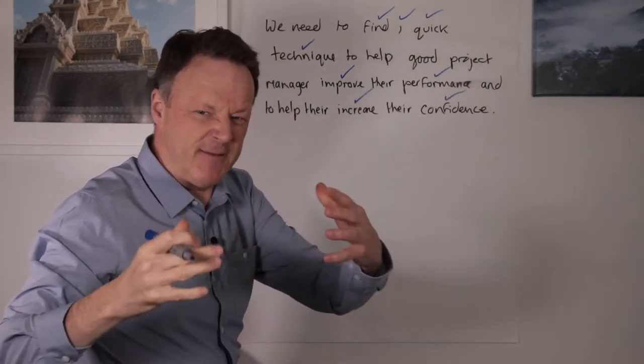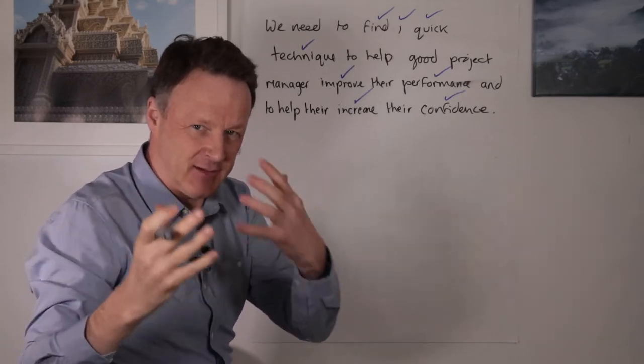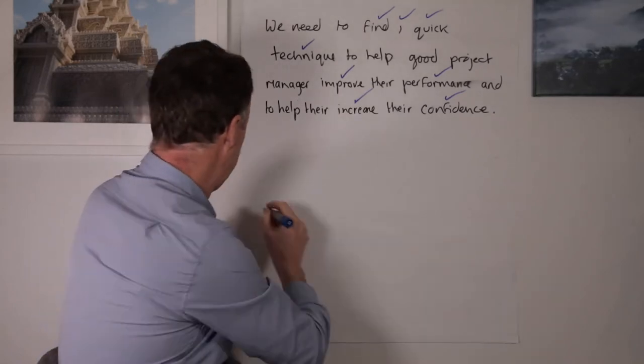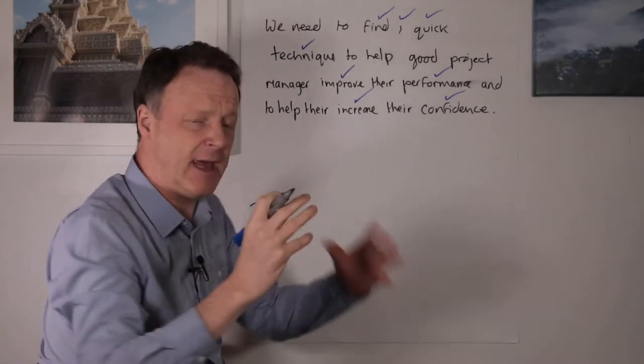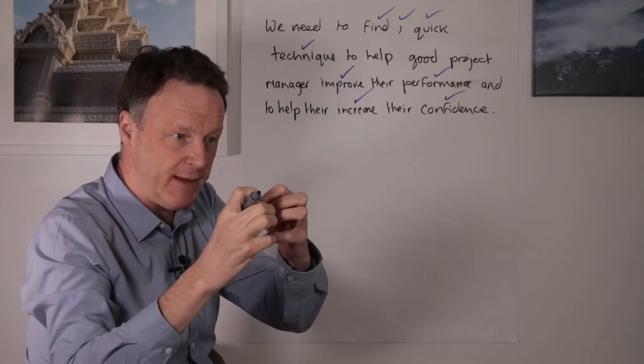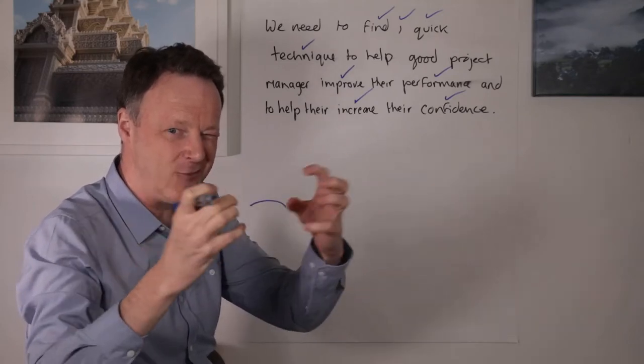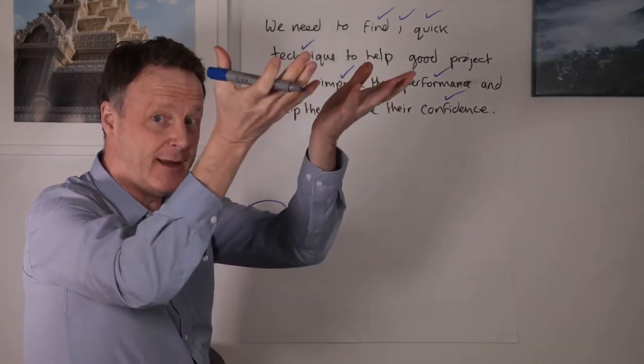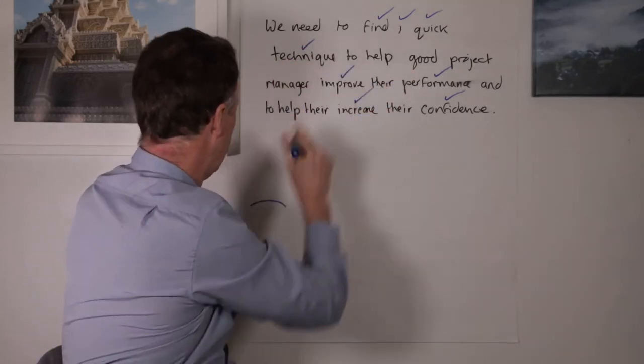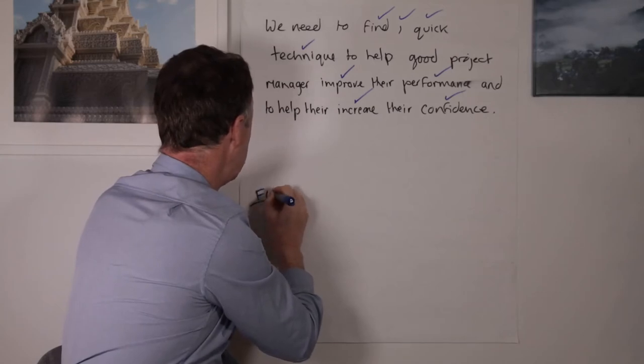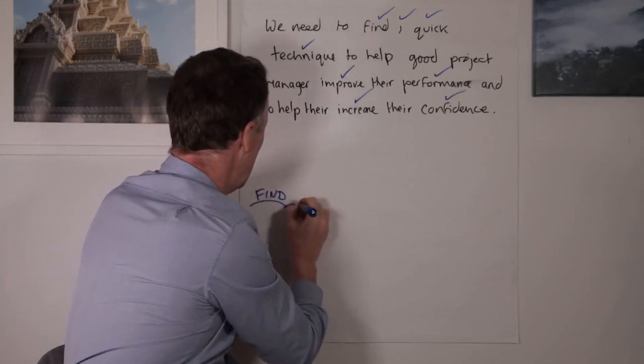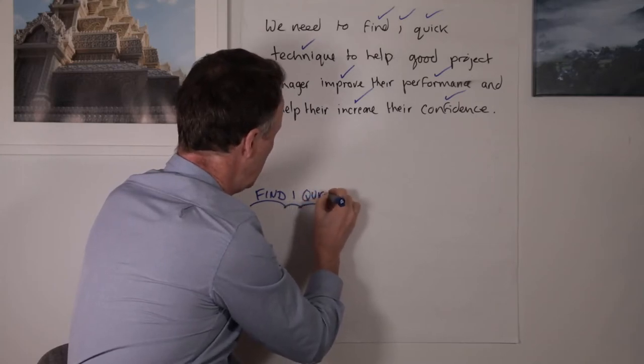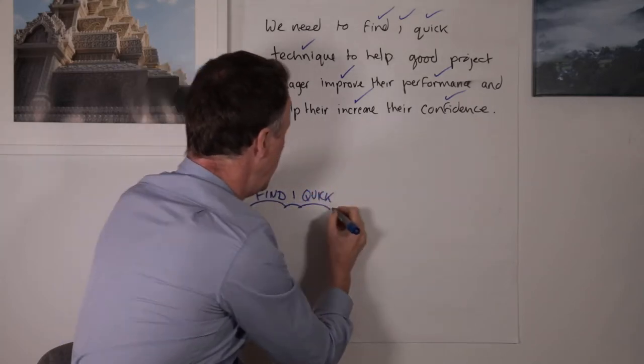Technique to help good project managers, I probably don't need that because I know that this is what it's all about. Improve performance, and to help that I don't need. Increase confidence. So now I've done the deep filtering. The next part of the magic formula is deep processing. Again I'll show you how it works. So I take, and the key with deep processing is a separation of all the information into single units and then reconnecting it. That drives up the understanding, the real-time understanding. So here we go. We go find one quick technique.